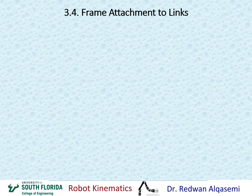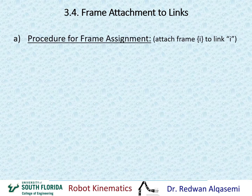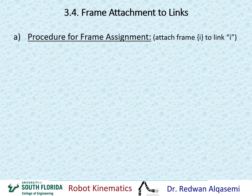In order to find the DH parameters and their values for each robotic arm, we need to first attach frames to each one of the links. There is a very simple procedure here that we need to understand. If we can understand that procedure, it's very easy and systematic to go through all the frame attachments and find the DH parameters. So first, let's talk about the procedure to attach the frames.